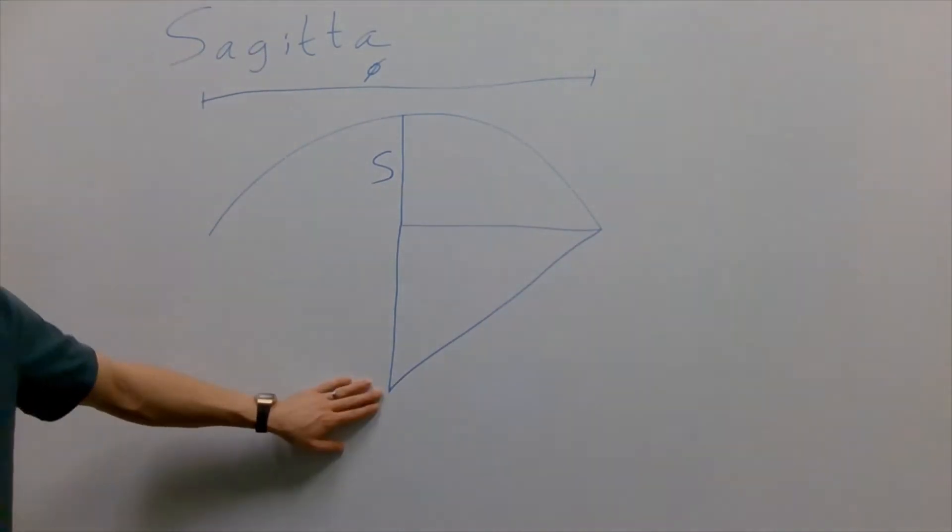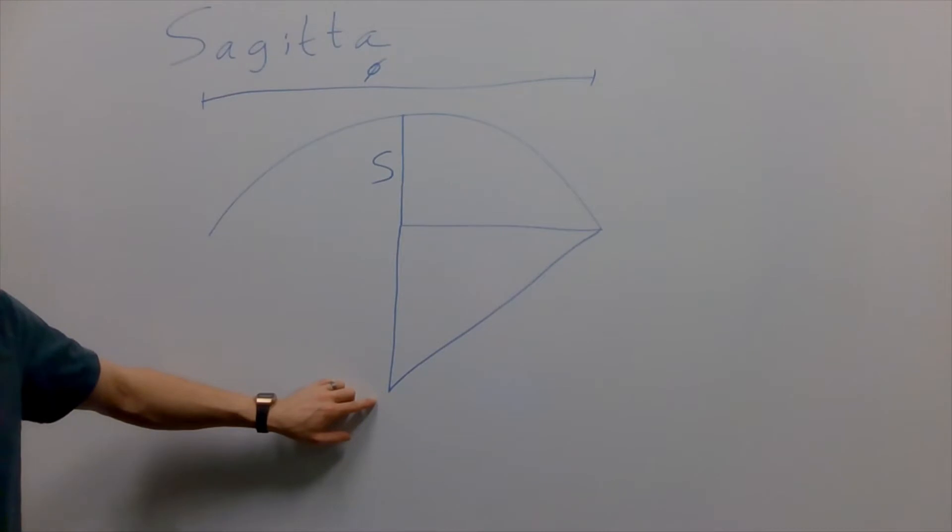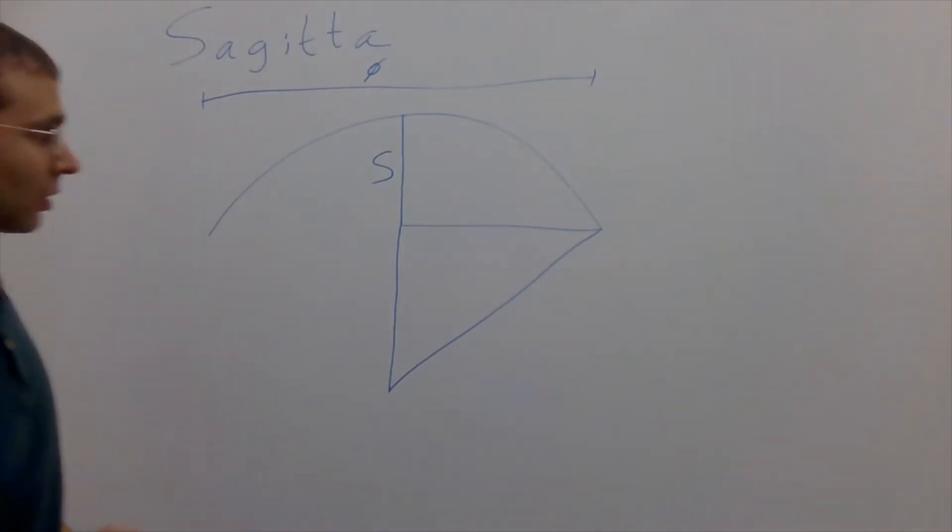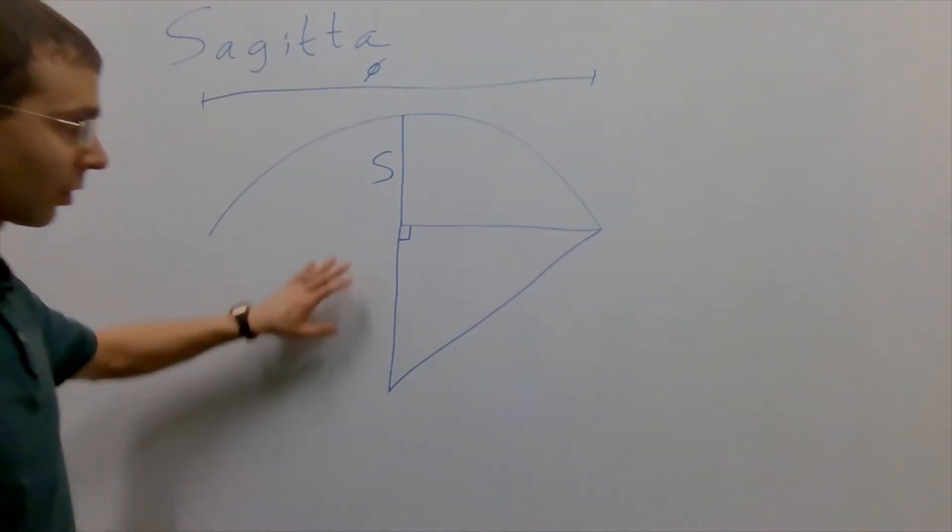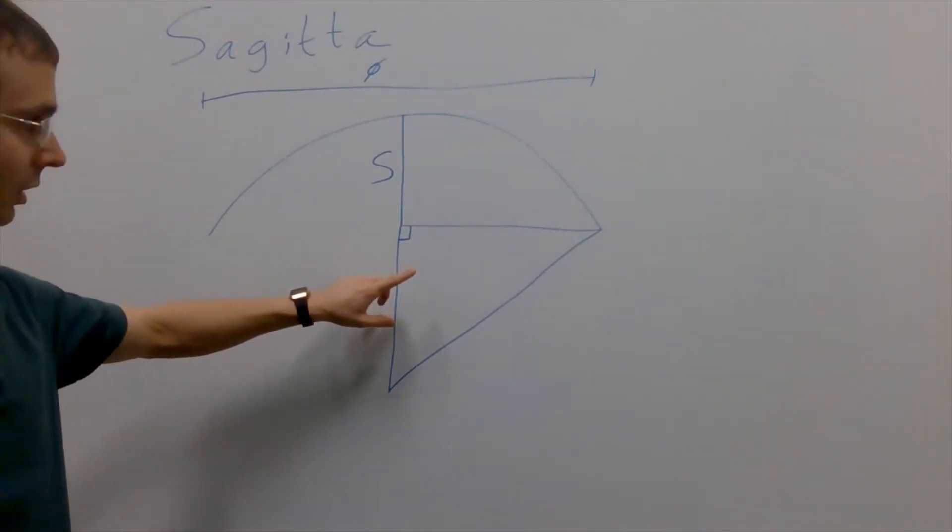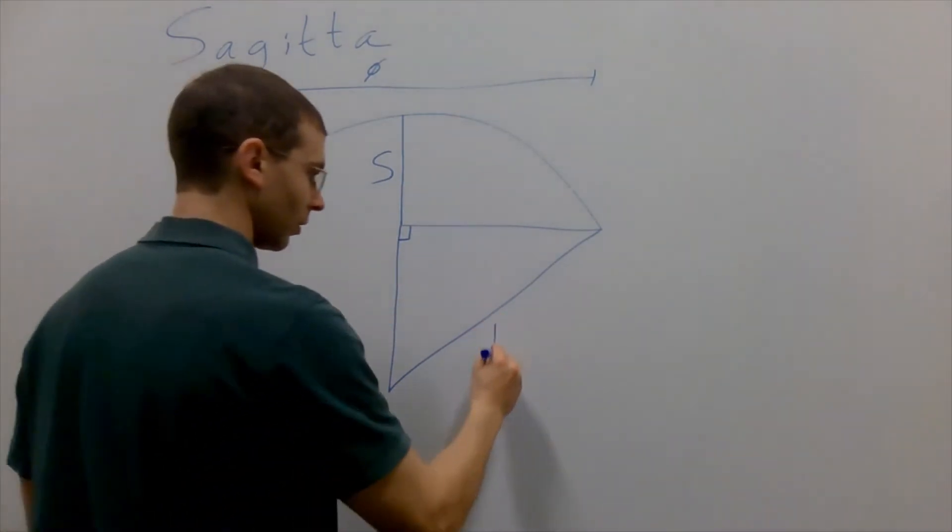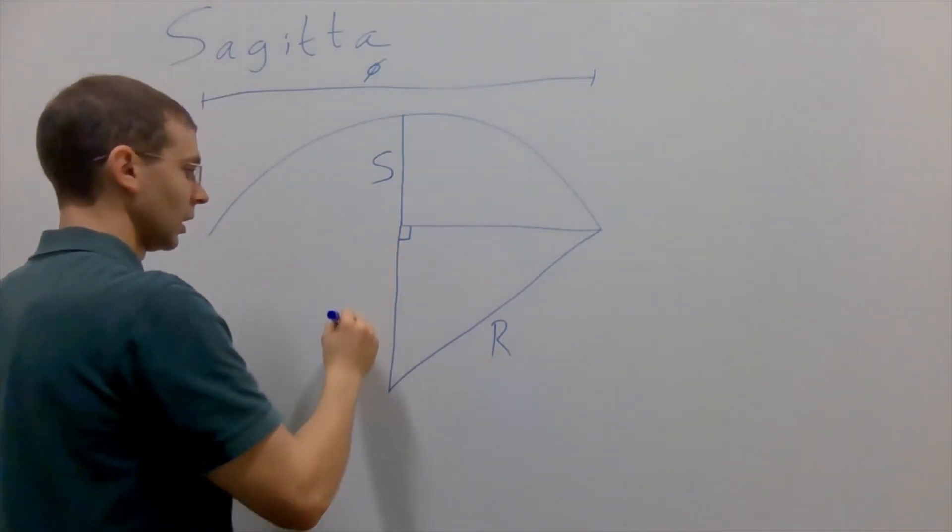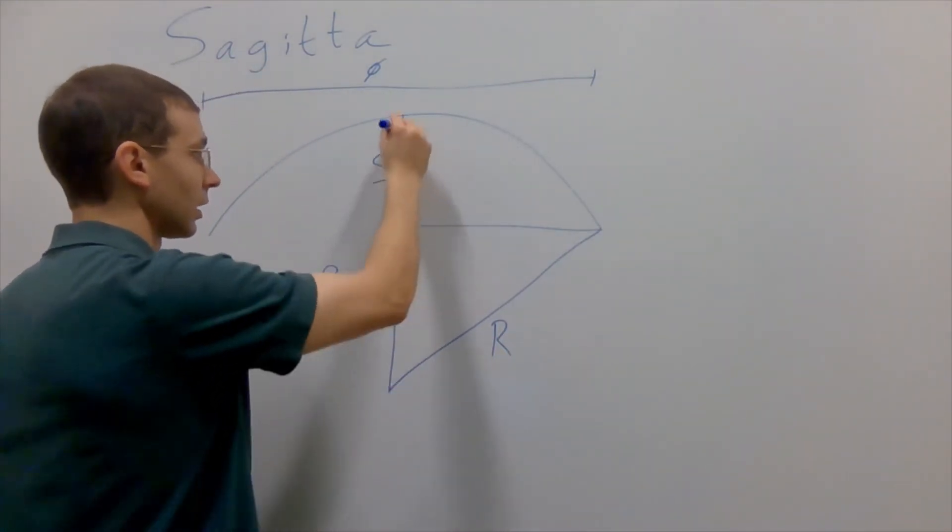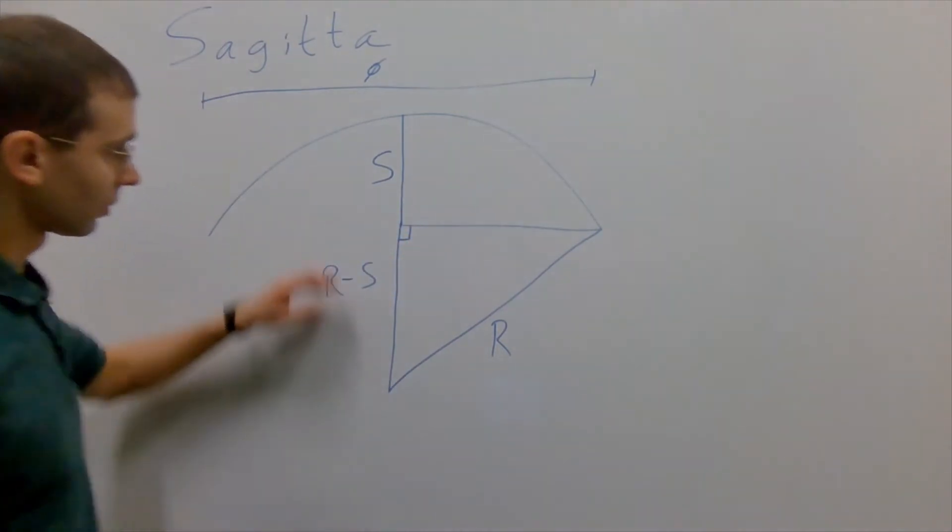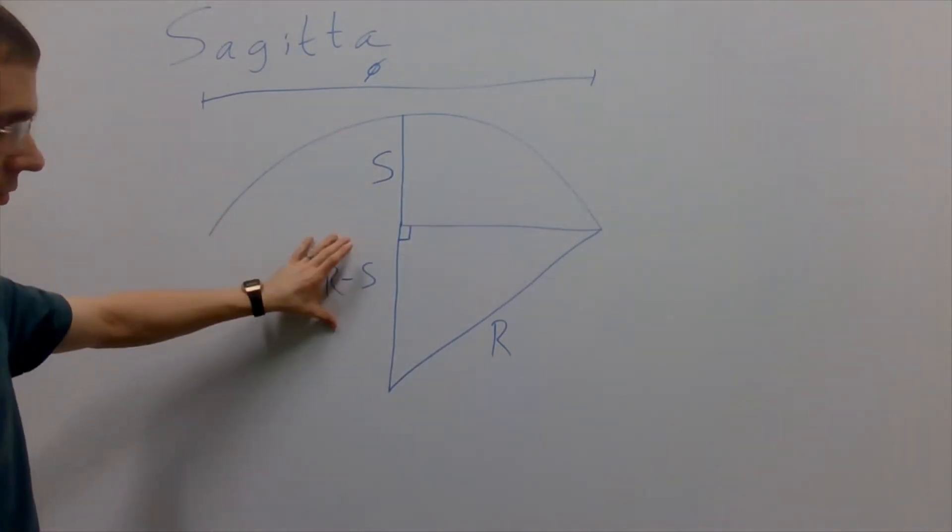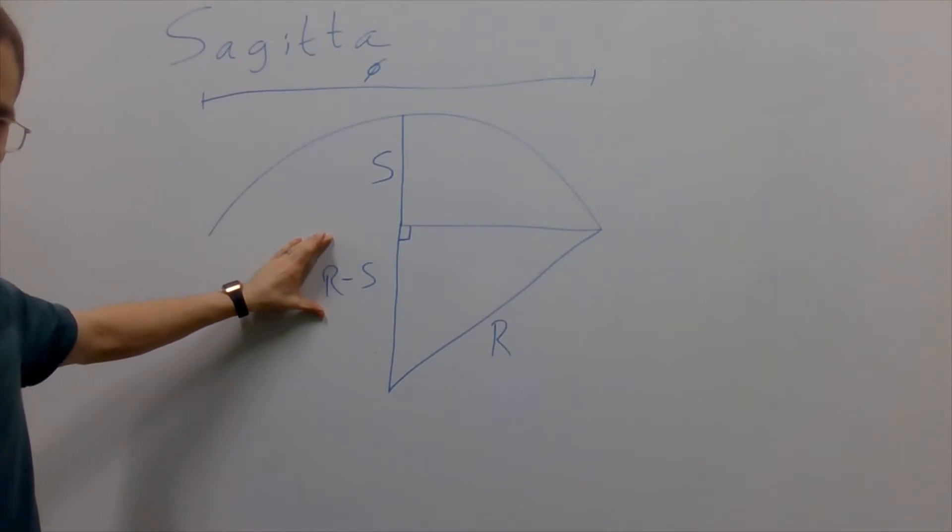So let's draw some triangles here. First off, we have this right triangle formed by the radius here, and this length here which is the radius. If we split it, well, if this is the SAG, then this is the radius minus the SAG.